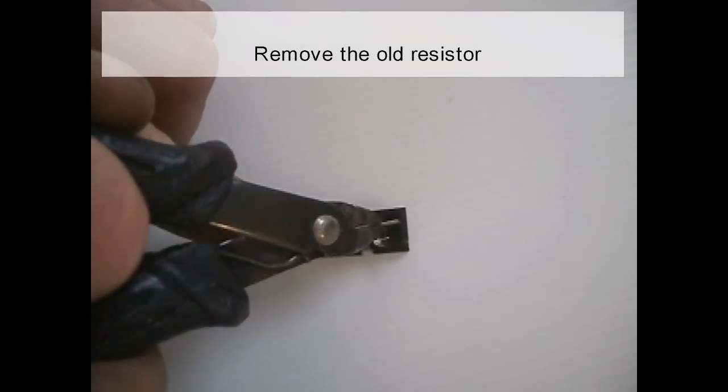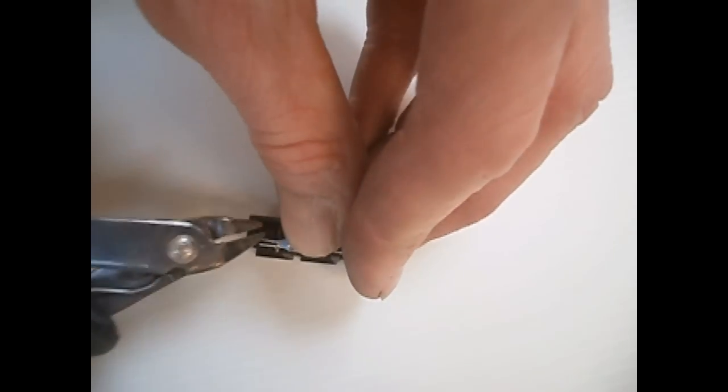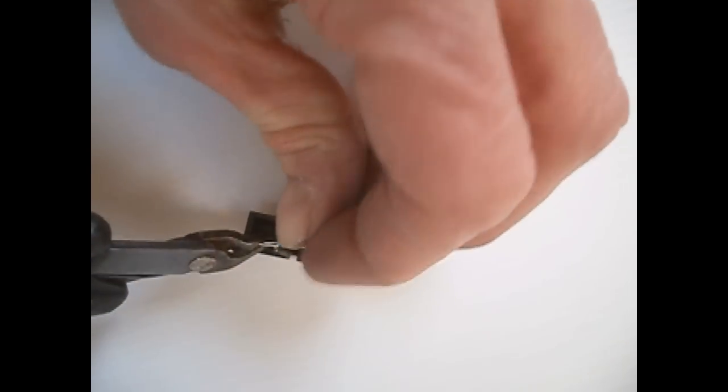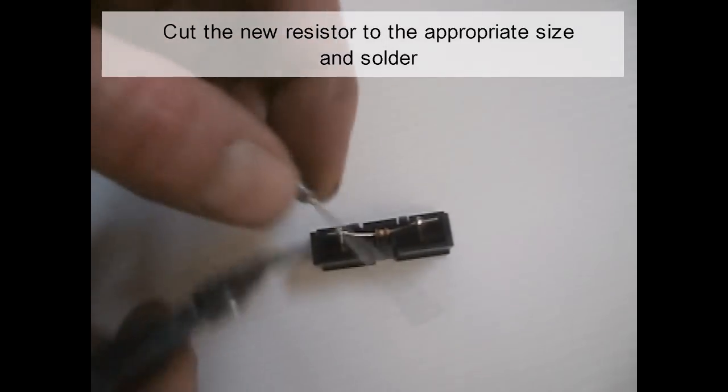Remove the old resistor. Cut the new resistor to appropriate size and solder.